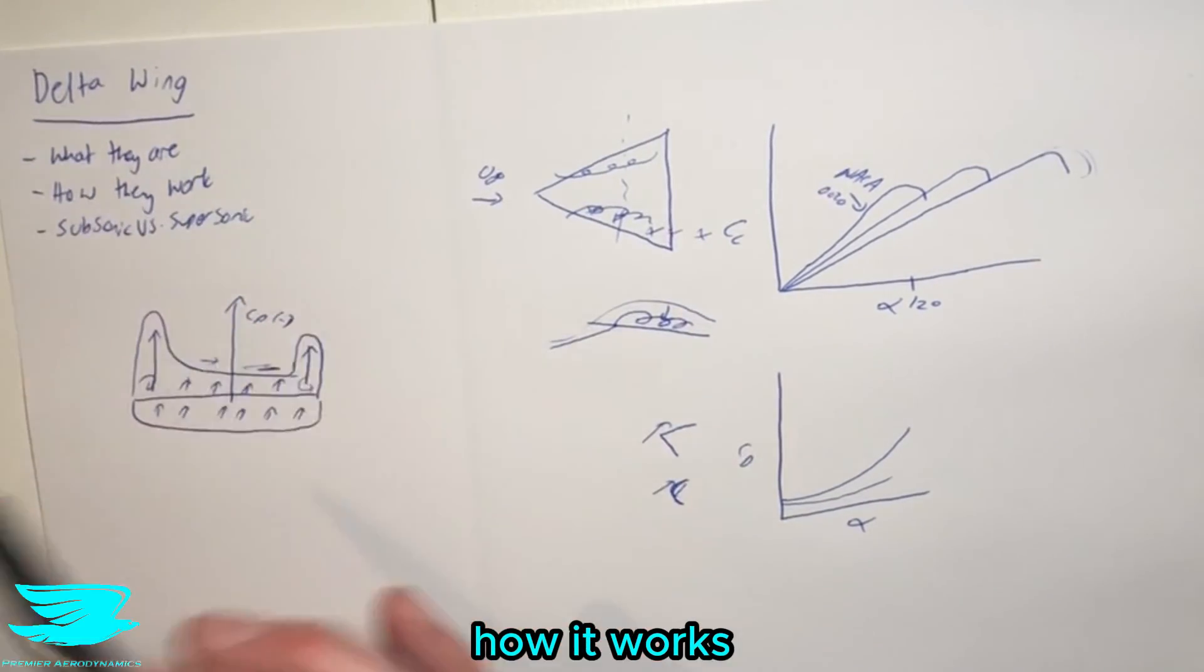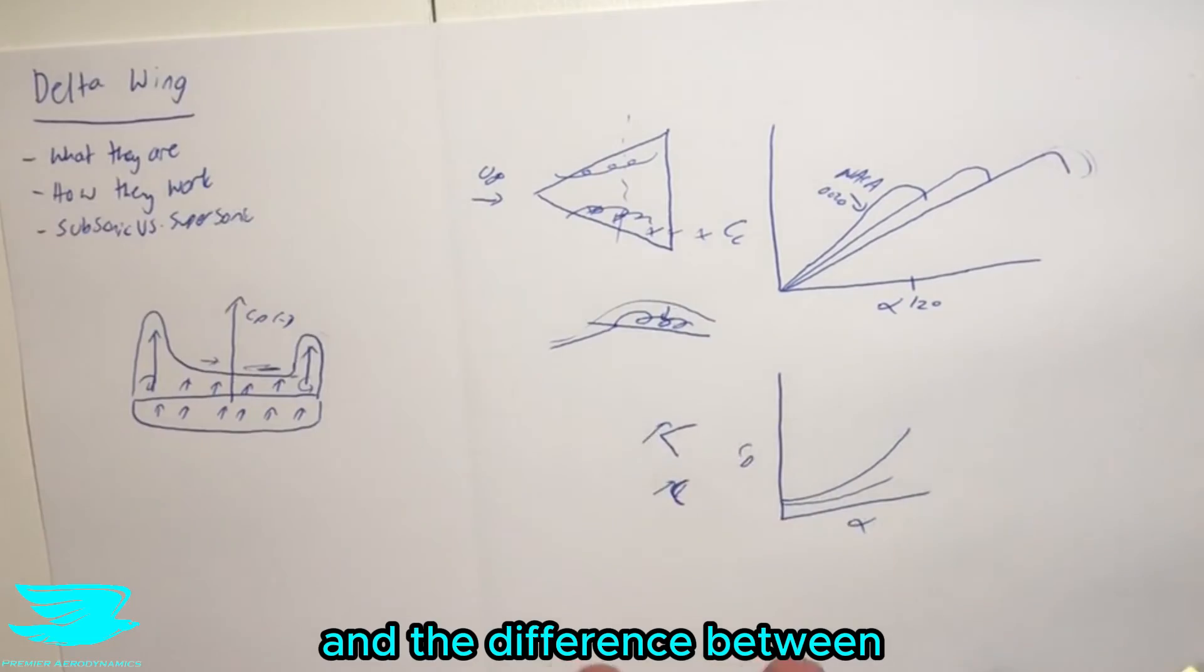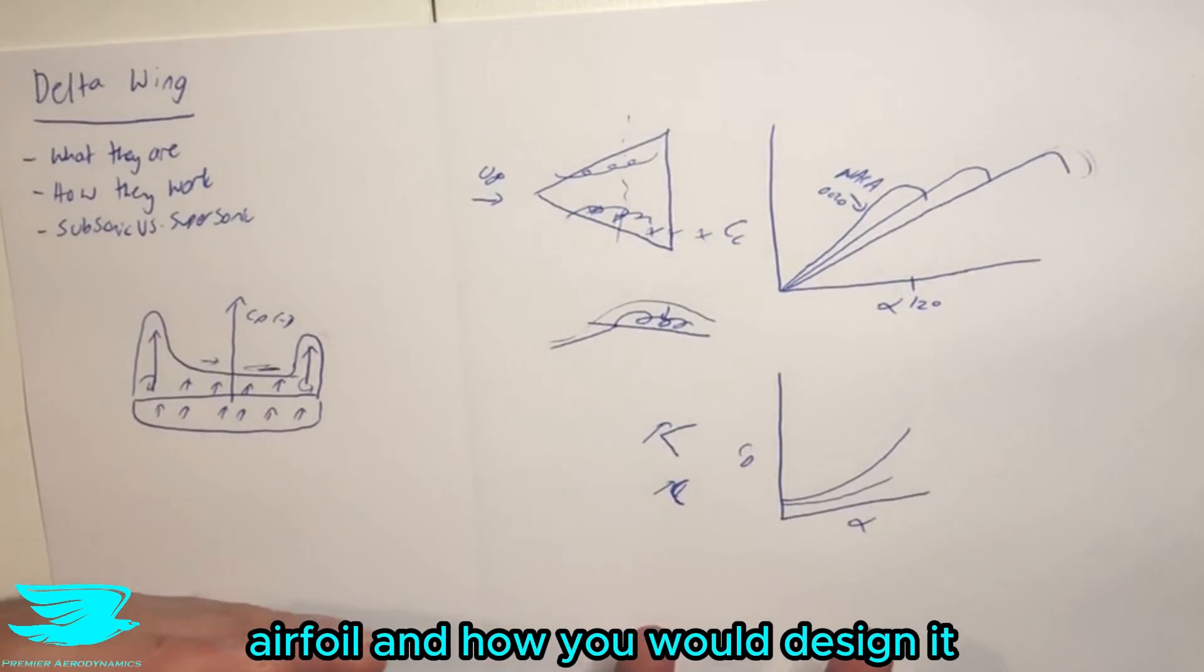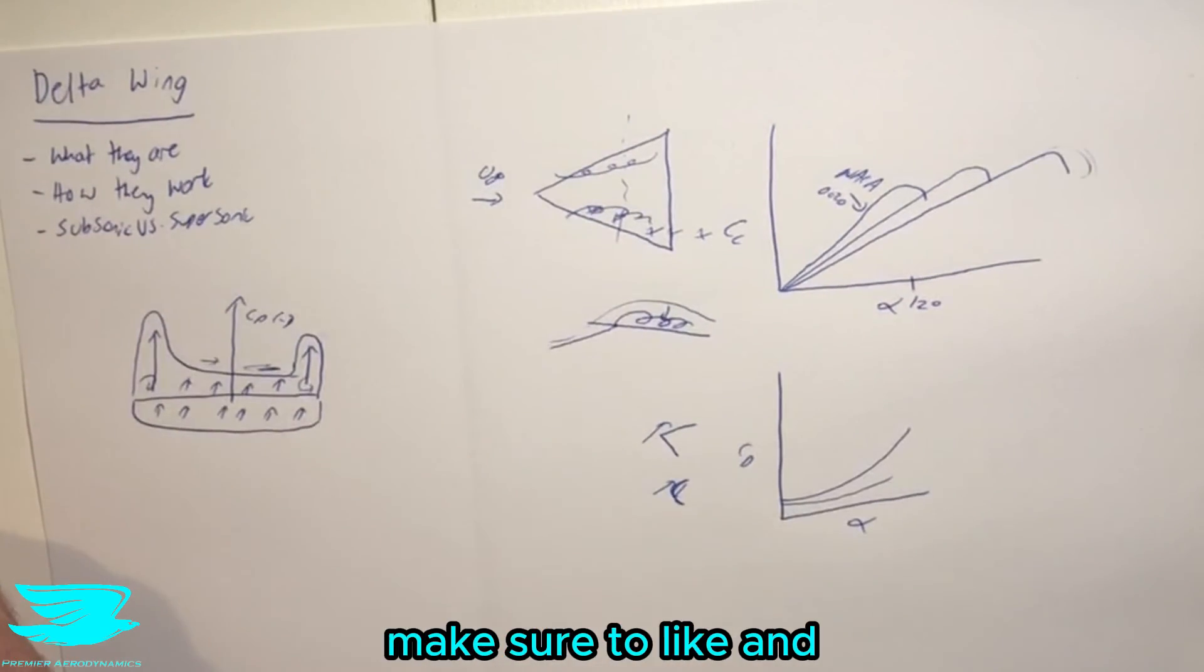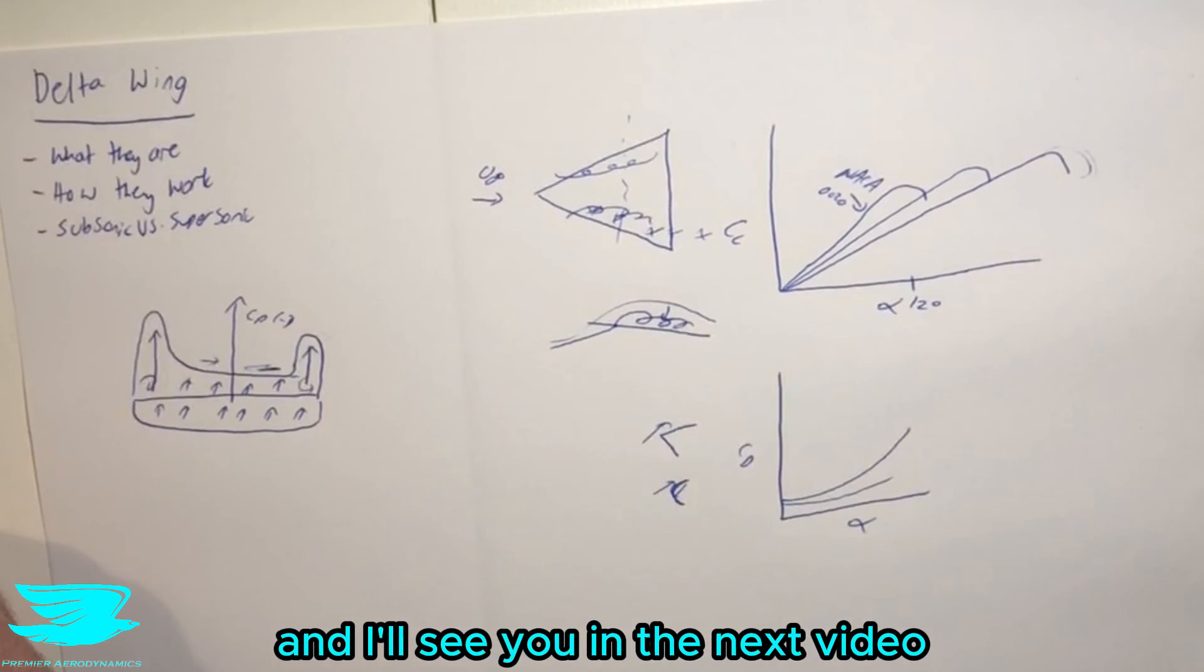So that is what a delta wing is, how it works, and the difference between a supersonic and subsonic airfoil and how you would design it. If you like this video, make sure to like and click the subscribe button. And I'll see you next time. Peace out, amigos.